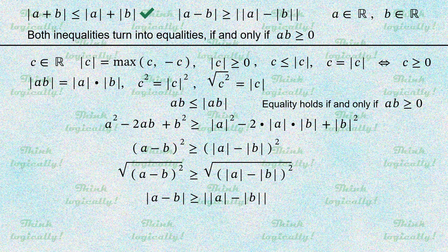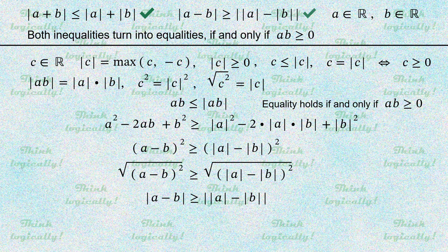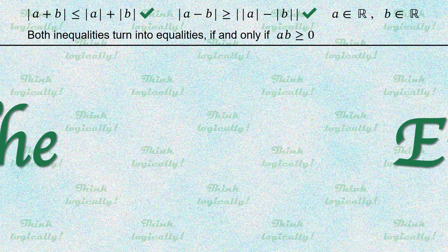And again it turns into an equality if and only if the original inequality turns into equality, that is, a times b is non-negative. And we place the second tick and say the end.